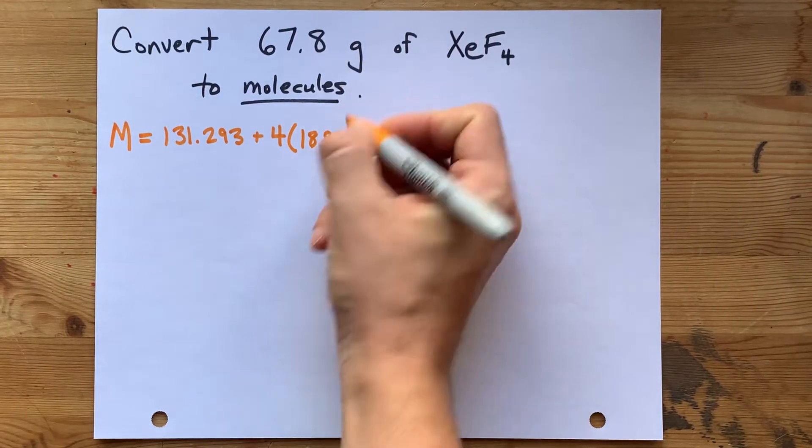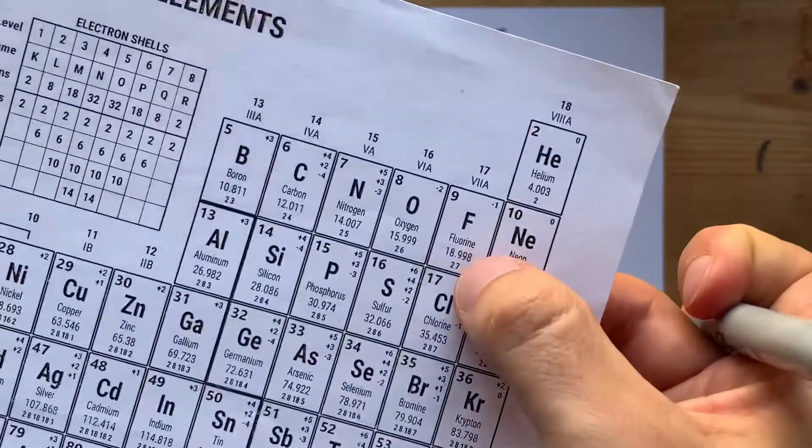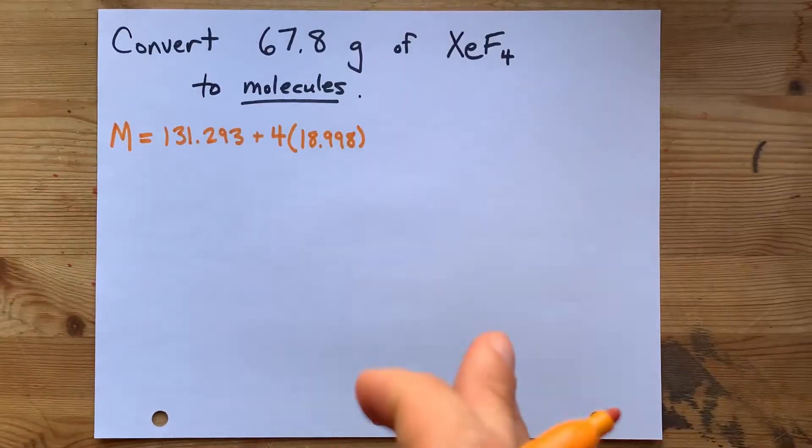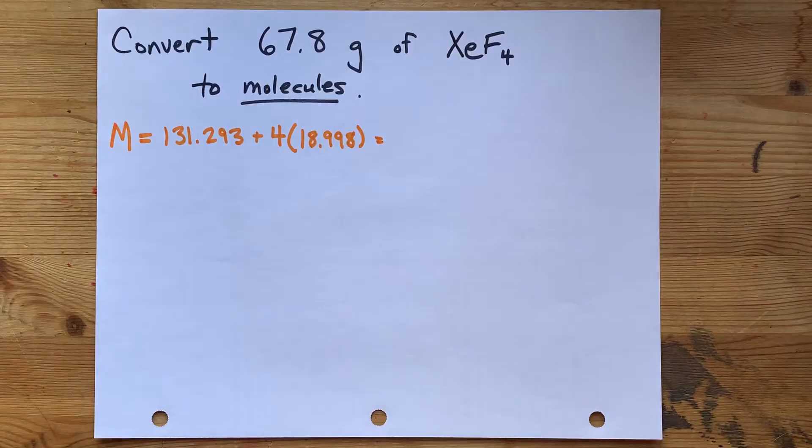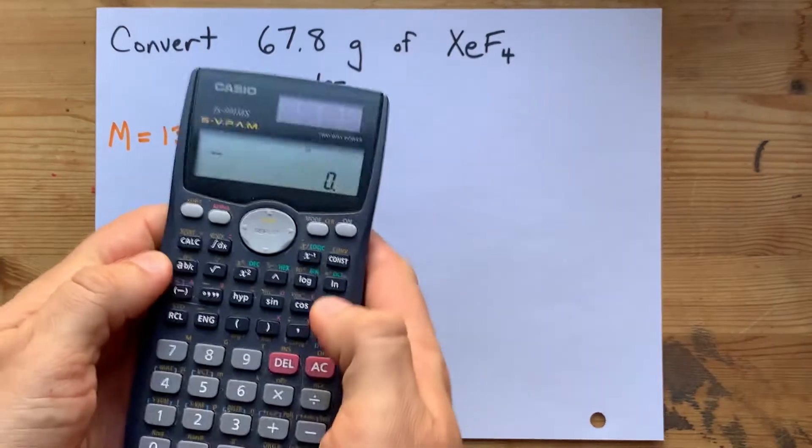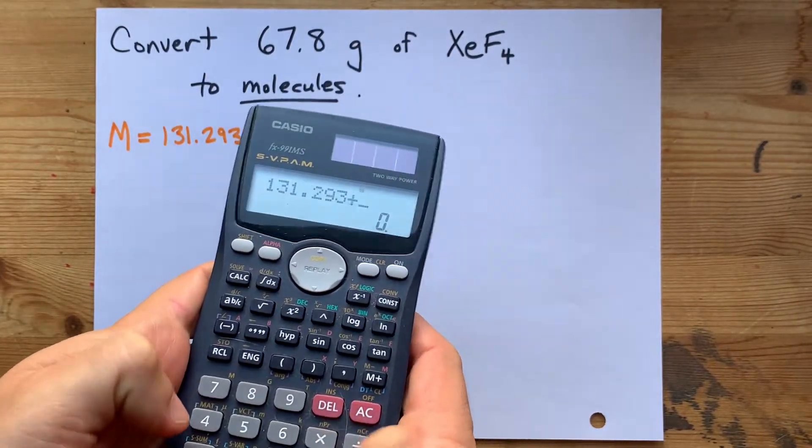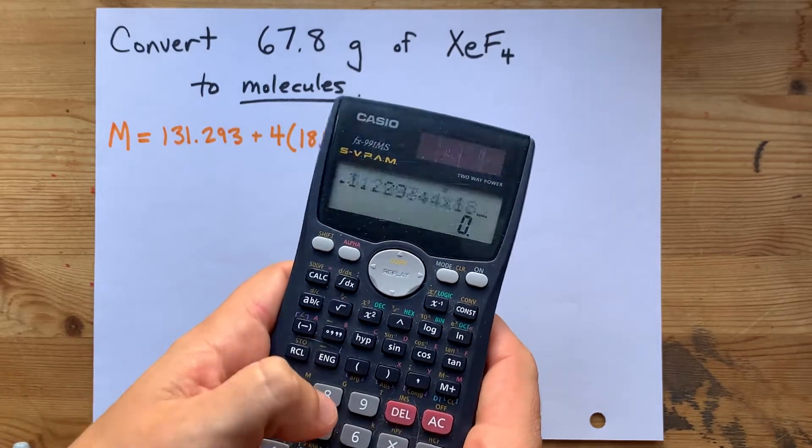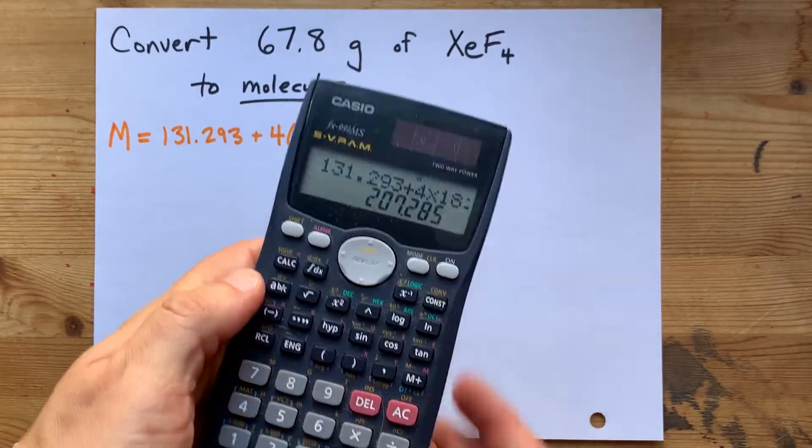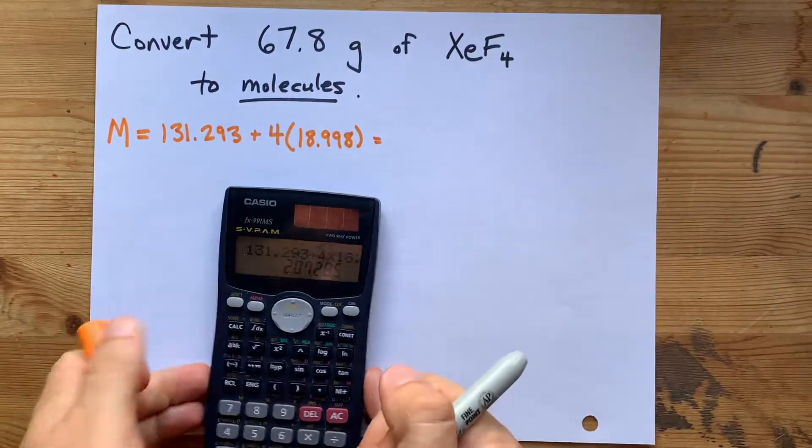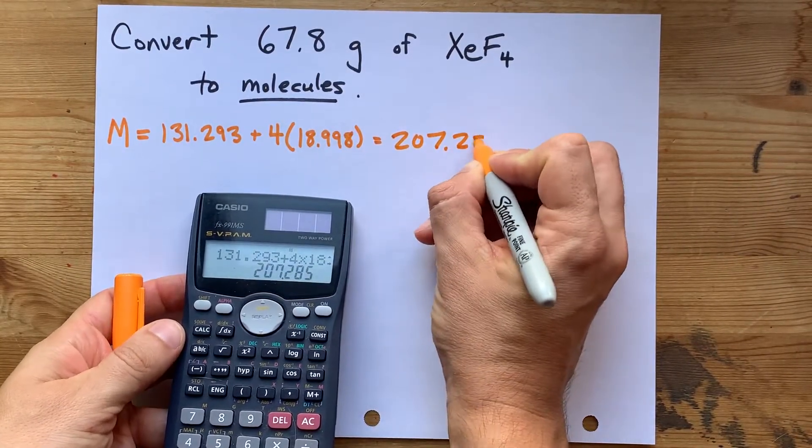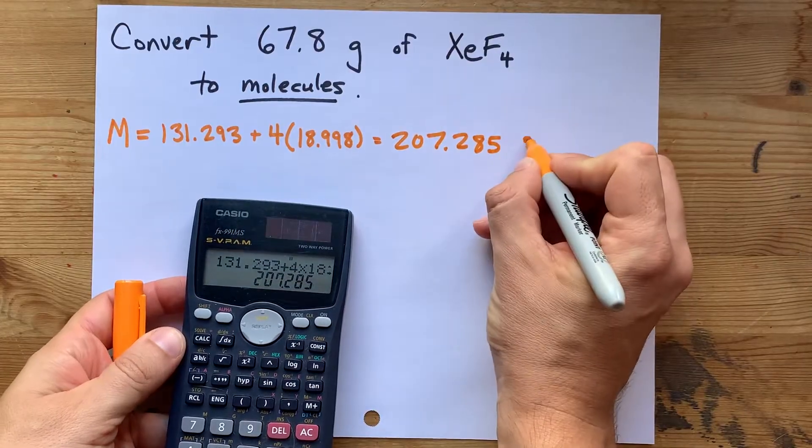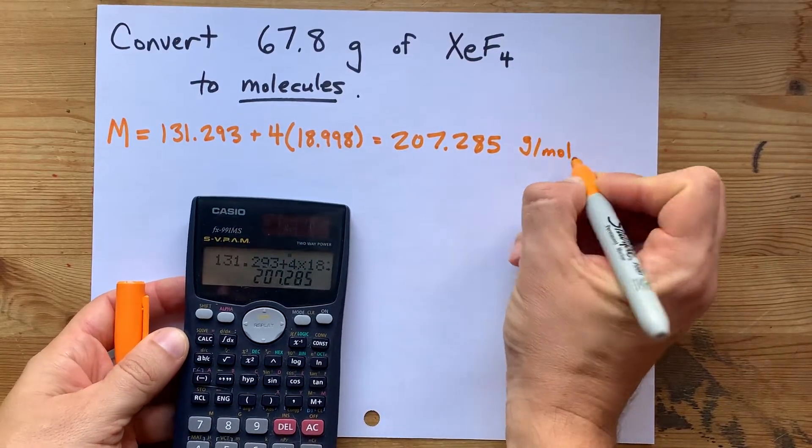Now, you may have a different periodic table that has slightly different numbers here, depending on how they're rounded. Use the table you're given. It'll be great. Now, you've got to do this on your calculator. I've got 131.293 plus 4 times 18.998. Bam! I get a total of 207.285, and the units on molar mass is grams per mole.